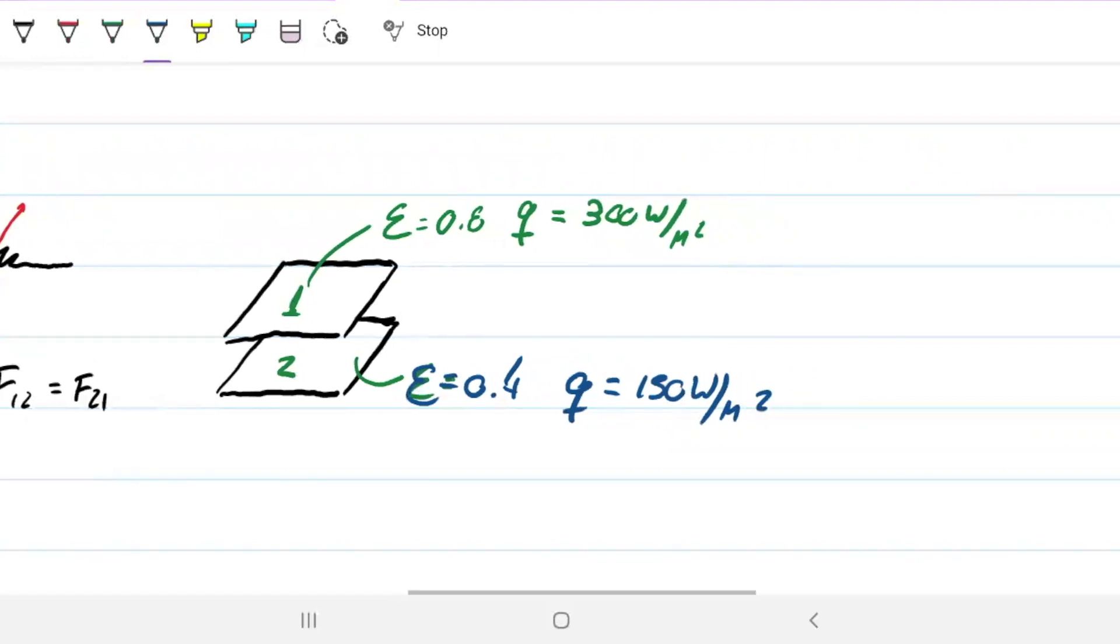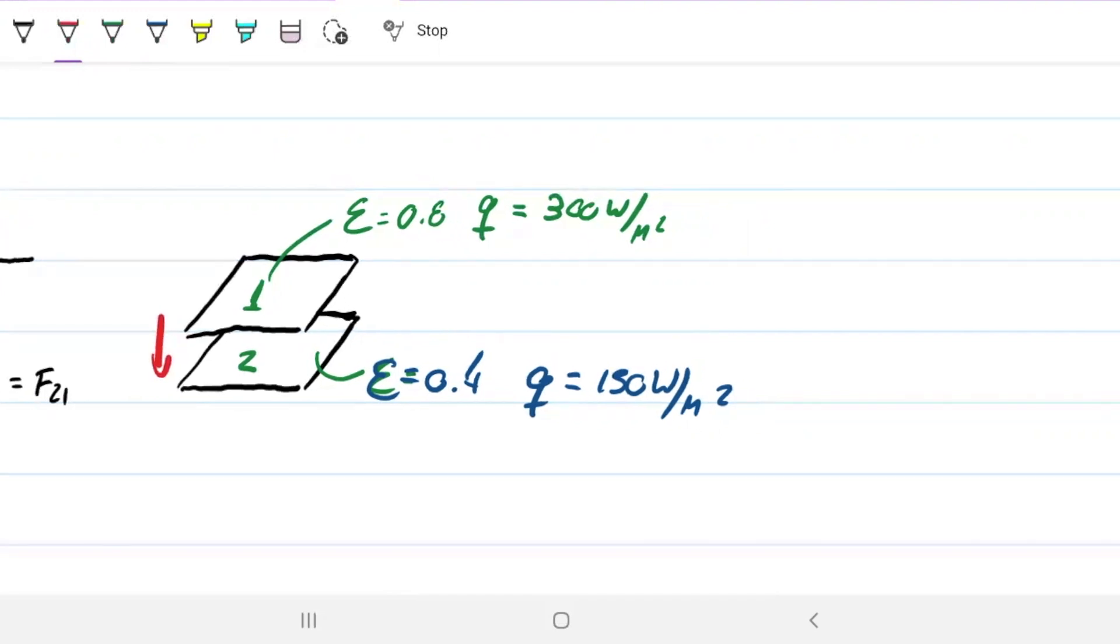Note that before we find out the temperatures, there's no way of us knowing whether Q is going that way or this way. We know that the one that has a higher temperature will be giving away energy, whilst the other one is going to be absorbing. So what we're interested in is first finding the temperature of the two of them.